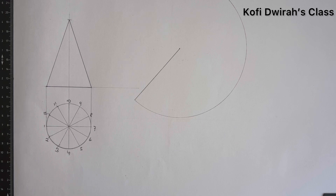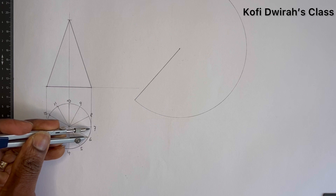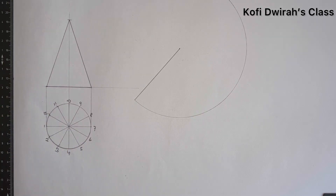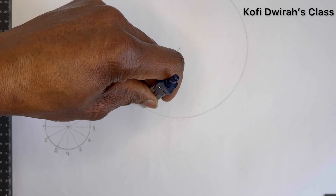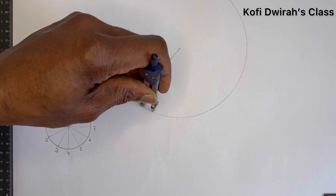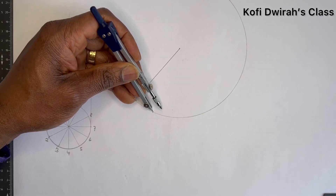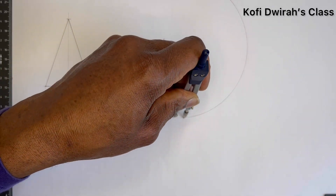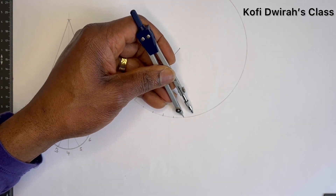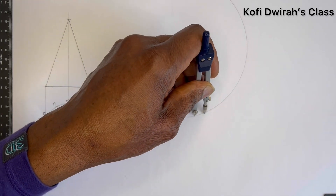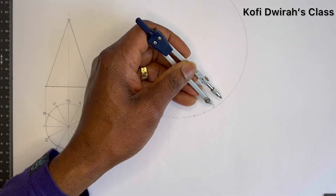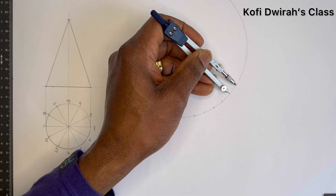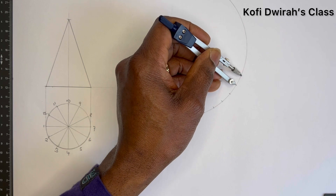With your divider or compass, you measure the chord distance — it can be from one to two or two to three. You measure like this, then you mark 12 of those divisions: one, two, three, four, five, six, seven, eight, nine, ten, eleven, twelve.